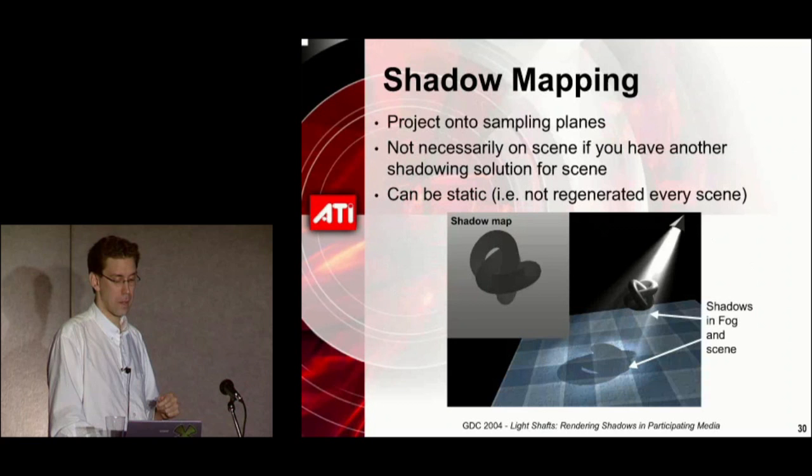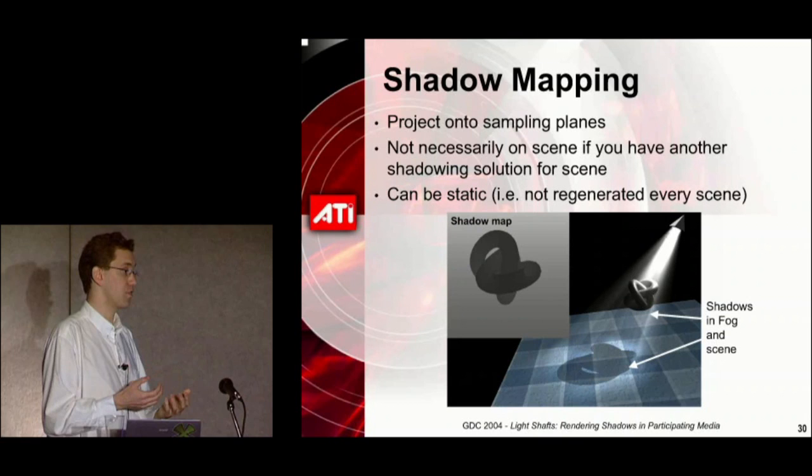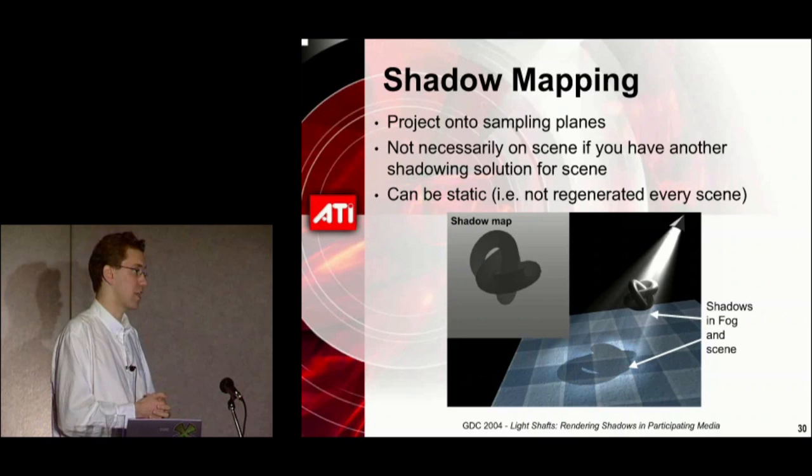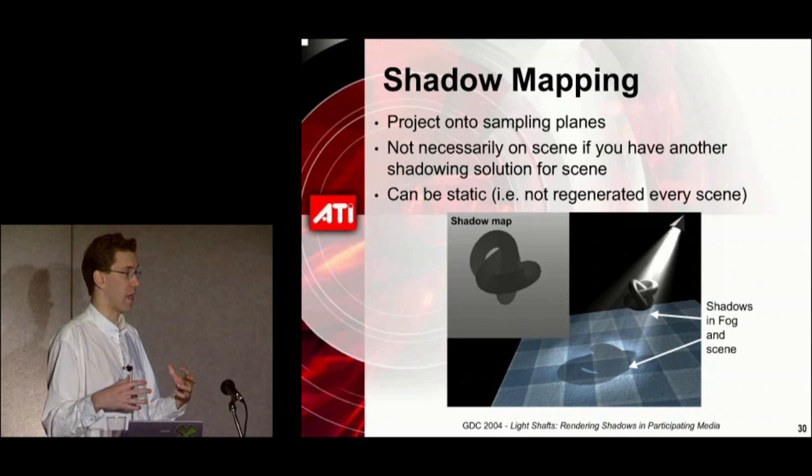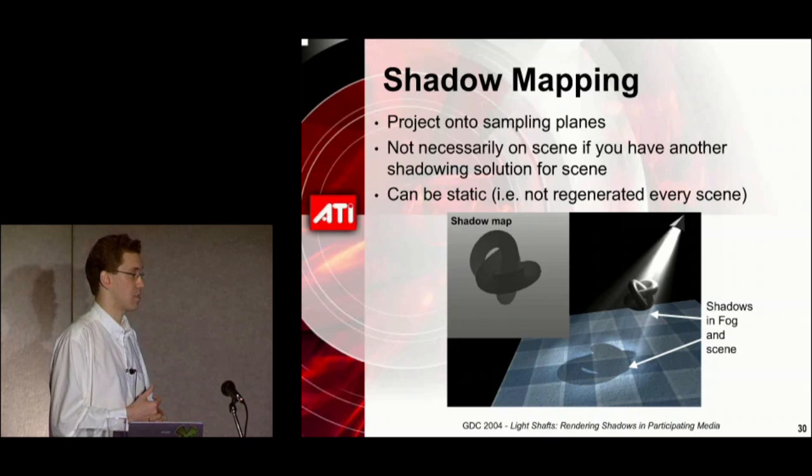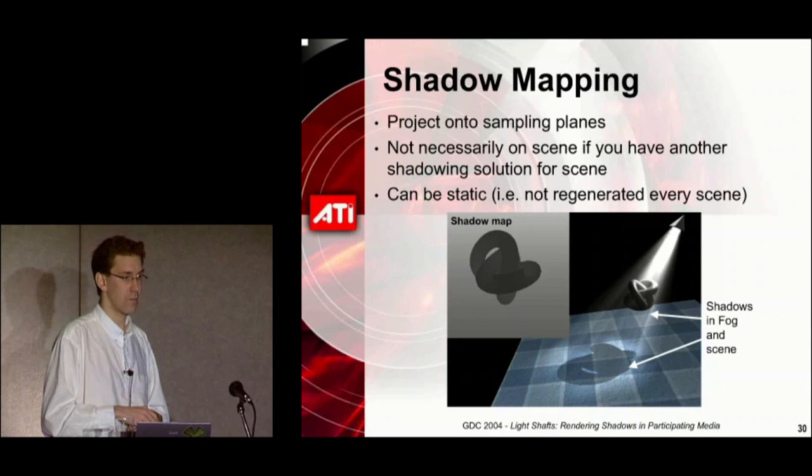The shadow map is rendered from the point of view of the light source each frame — and not necessarily rendered for the rest of the scene. If the objects, scene, and light are not animating, you can actually reuse the shadow map every frame, keeping it around as a potential optimization for your particular scenario.